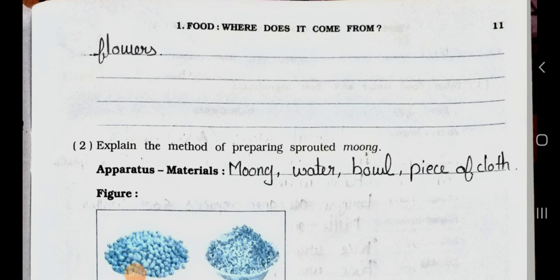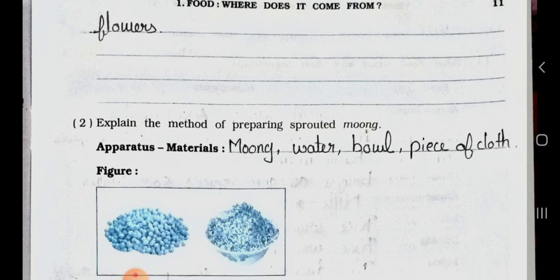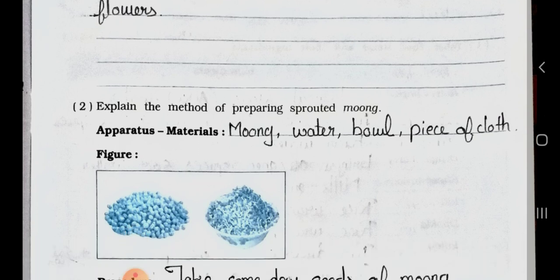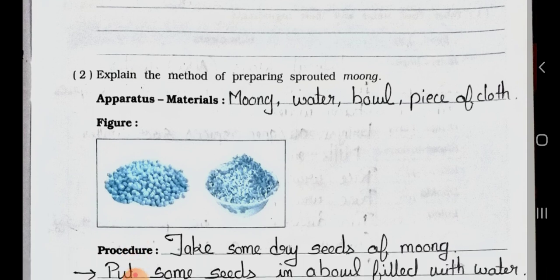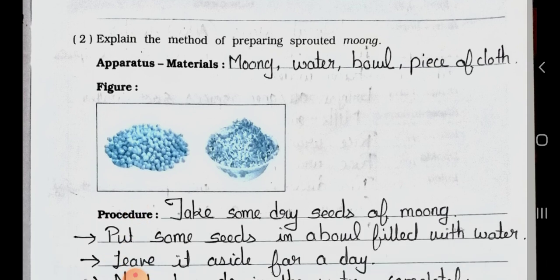Now see question number 2: Explain the method of preparing sprouted moong. The apparatus and materials needed are moong, water, a bowl, and a piece of cloth. Now see the figure — the moong seeds are shown, and beside them a sprouted moong ball is given.